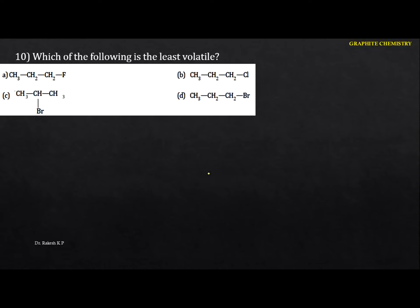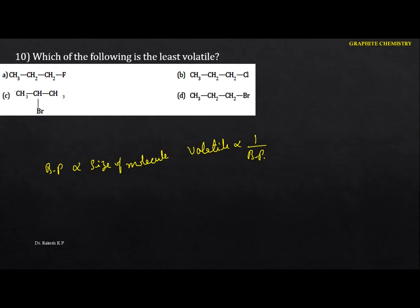Next: which compound is least volatile? Volatility is inversely proportional to boiling point, and boiling point is directly proportional to molecular size due to Van der Waals forces. A branched compound has a lower boiling point. The largest molecule has the greatest Van der Waals attraction and thus the least volatility. The option is D.